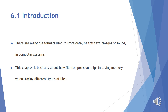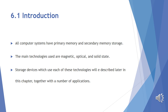This chapter will consider how file compression is used to save memory when storing different types of files. All computer systems have primary and secondary memory storage — we have been reading this line since grade 6 and continue to see it in hardware and storage chapters. The main technologies are magnetic, optical, and solid state.